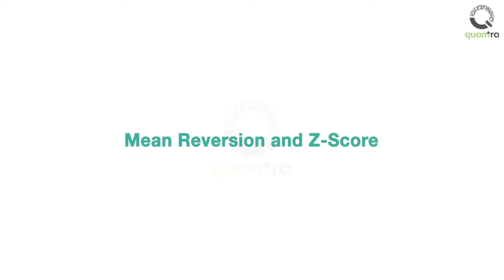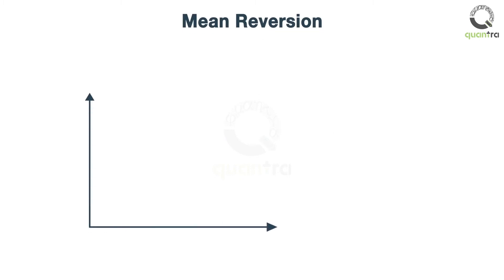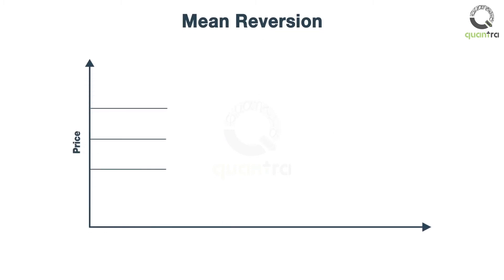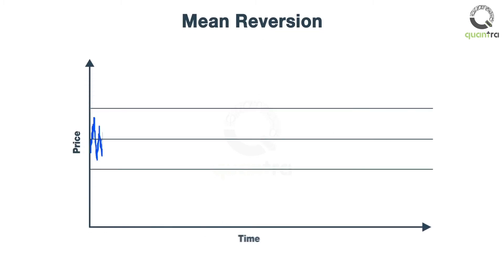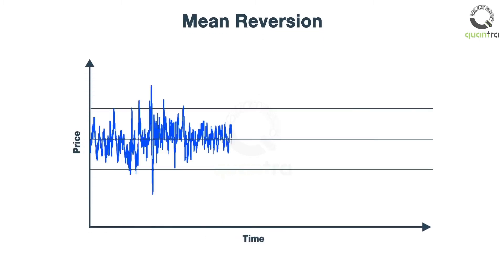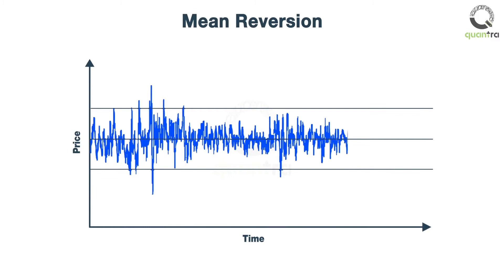In this video, we will discuss mean reversion and Z-score. Mean reversion suggests that prices, or various economic indicators, tend to move around the historical average, or mean.